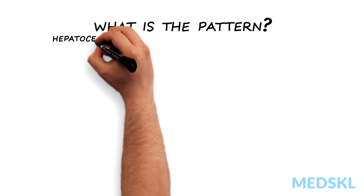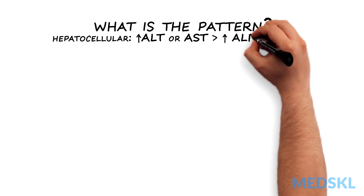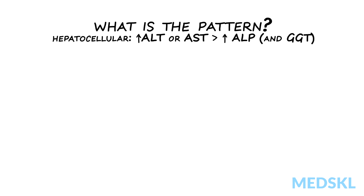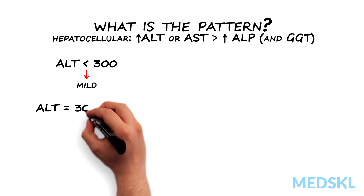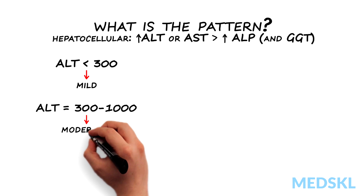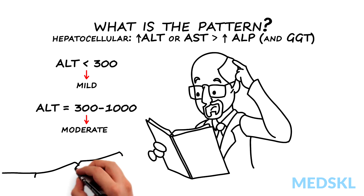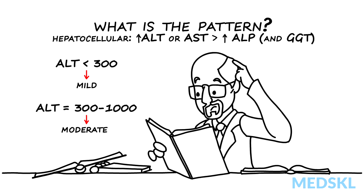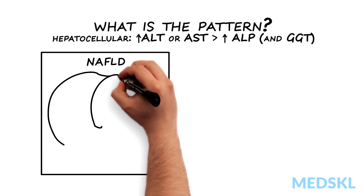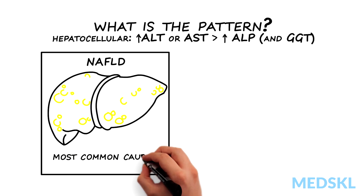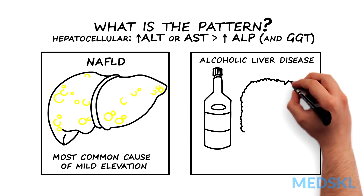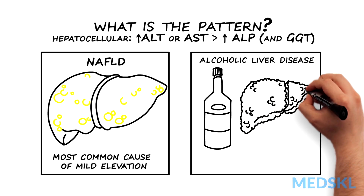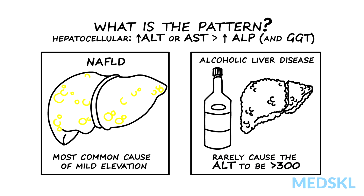If the pattern of injury is hepatocellular — that is, the ALT or AST rise is greater than the ALP and GGT — determine the severity using the ALT level. An ALT of less than 300 is mild, and 300 to 1000 corresponds to moderate liver disease. These can be acute or chronic and unfortunately the differential diagnosis is broad. Non-alcoholic fatty liver disease, NAFLD, is the most common cause of mild elevation. Alcoholic liver disease is associated with an AST that is often two to three times higher than the ALT, but alcohol or NAFLD rarely cause the ALT to be greater than 300. Further evaluation and testing will be guided by your history and clinical suspicion.